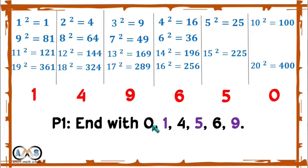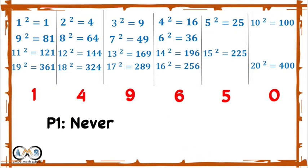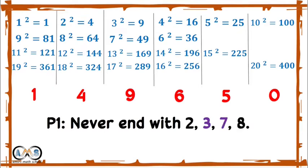Considering 0 as even, perfect square numbers end with 0, 4, 6 (even) or 1, 5, 9 (odd). That is, the perfect square number will never end with 2, 3, 7, or 8. If any number ends with 2, 3, 7, or 8, that number must not be a perfect square number.